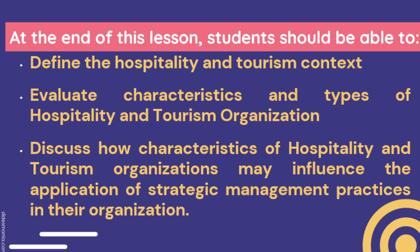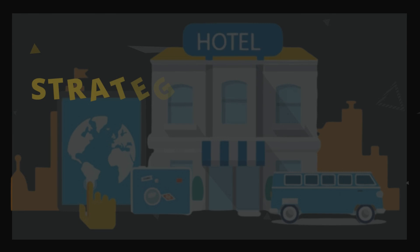These are our learning objectives for today. For the first part of the video, I hope you will be able to define the hospitality and tourism context — what really is the definition of hospitality and tourism. On the second part, we will evaluate different characteristics and types of hospitality and tourism organizations, and discuss how these characteristics may influence the application of strategic management practices. With that, let's start.